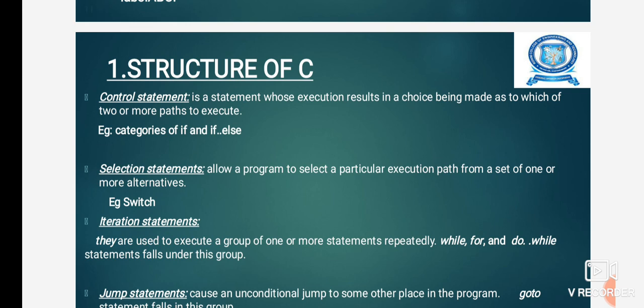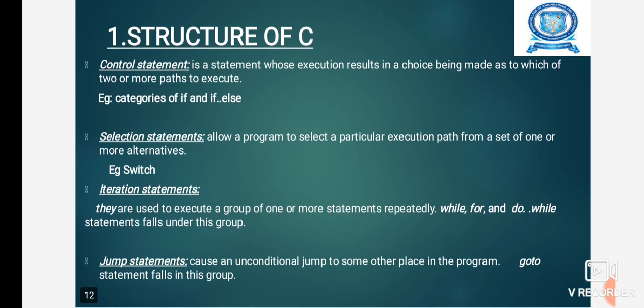Control statements can be used to check whether a condition is true or false. Selection statements allow the program to select a particular execution path from a set of one or more alternatives. Iteration statements execute a group of one or more statements repeatedly, like for, while, do-while, etc.